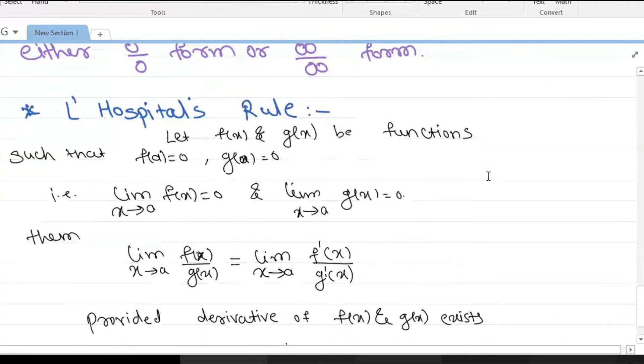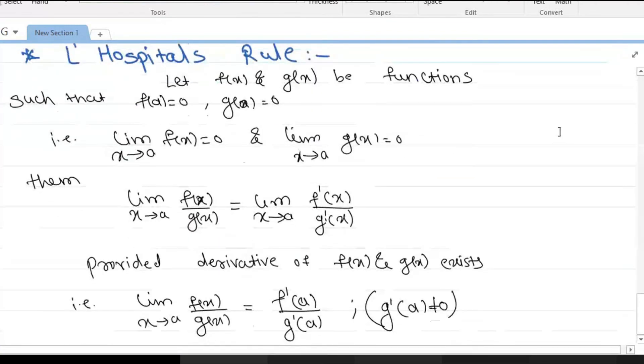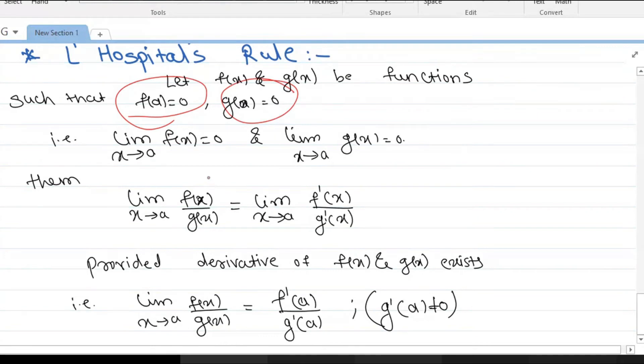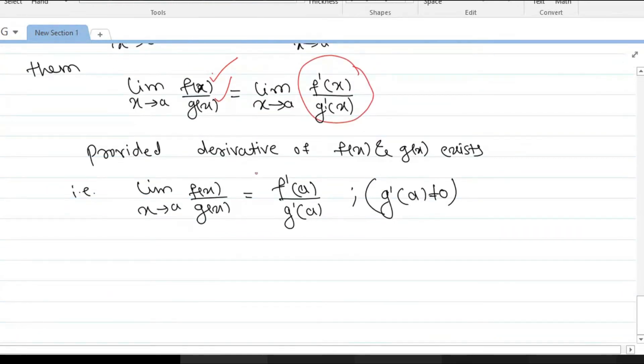If we have f(a) equals 0 and g(a) equals 0, then differentiate the numerator and denominator, which gives f'(x)/g'(x), and then replace x with a. If the denominator is not 0, you get a finite value other than 0.